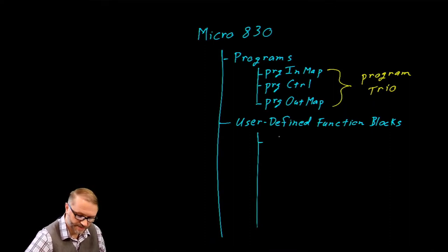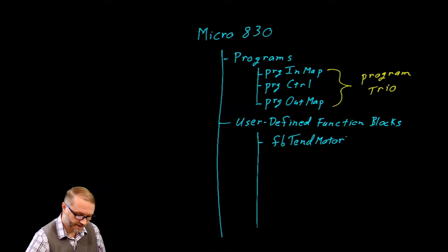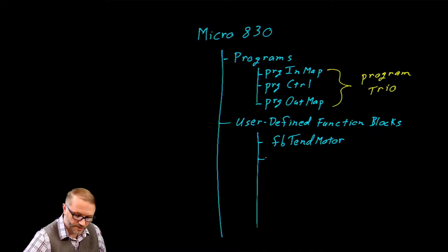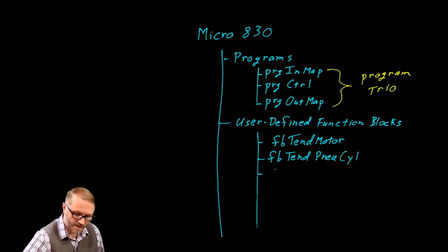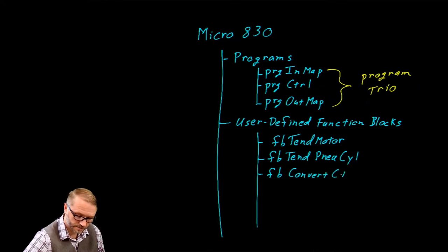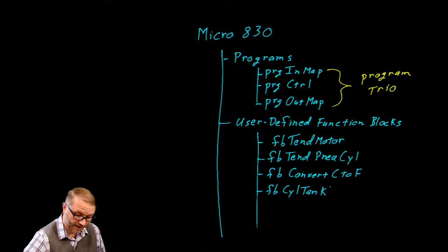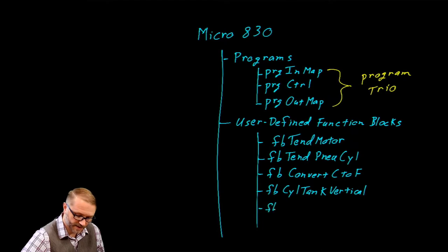This is where we can add our blocks. For example, function block tend motor, which we explored in the last lecture. Maybe a function block tend pneumatic cylinder — we'll explore that soon. Maybe a conversion function block; for example, you might want to convert Celsius to Fahrenheit. As a homework problem, we looked at a function block for a cylindrical tank, where that tank was vertical, not horizontal — that's a different problem. We also looked at a function block for on-off control.